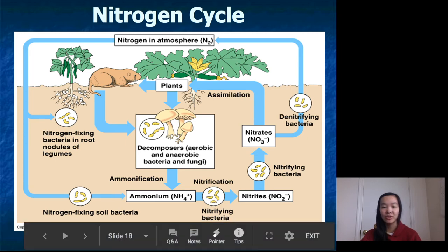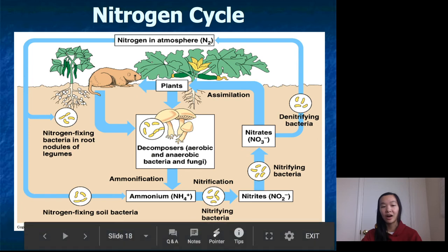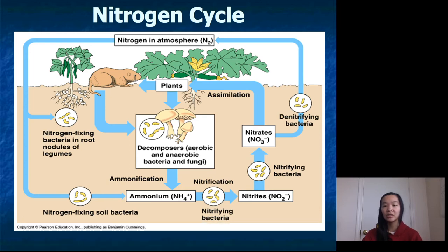You also have nitrogen-fixing bacteria in the soil. Ammonification is the process where nitrogen-fixing bacteria turn N2 into ammonium (NH4+), a form that can be taken up by plants. Then other bacteria called nitrifying bacteria can turn the ammonium into nitrates (NO3-). Moving to the right side of the picture, at nitrates: plants can take up either ammonium or nitrates, so the nitrates are assimilated by plants. After plants absorb the nitrogen, we eat the plants and absorb nitrogen that way.